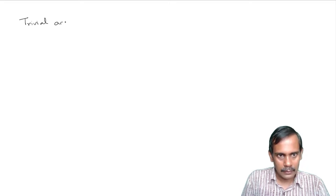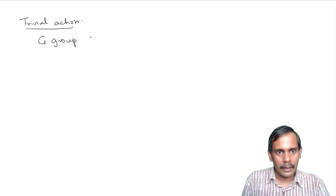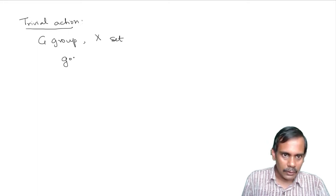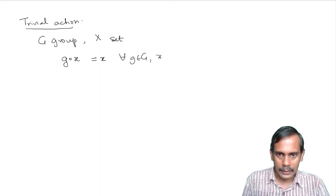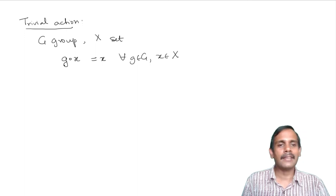The trivial action: take G to be a group and X any set, then define G dot X to be X for all G in G and all X in X. This is the action where nothing happens, and it's easy to verify that it satisfies both axioms.